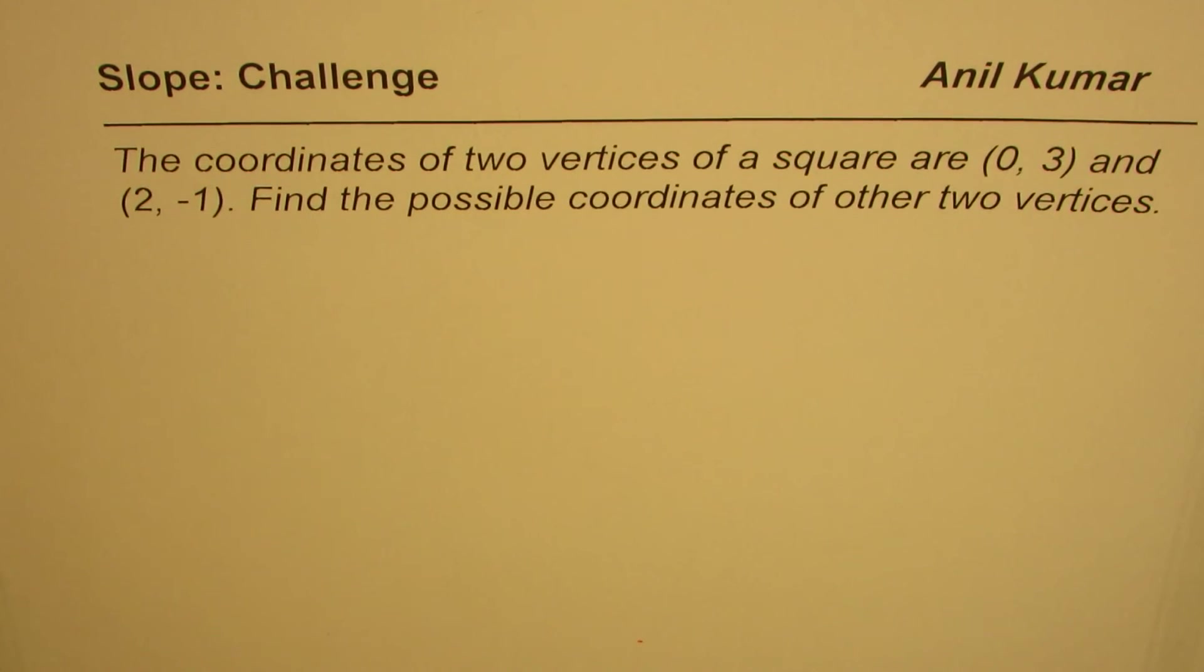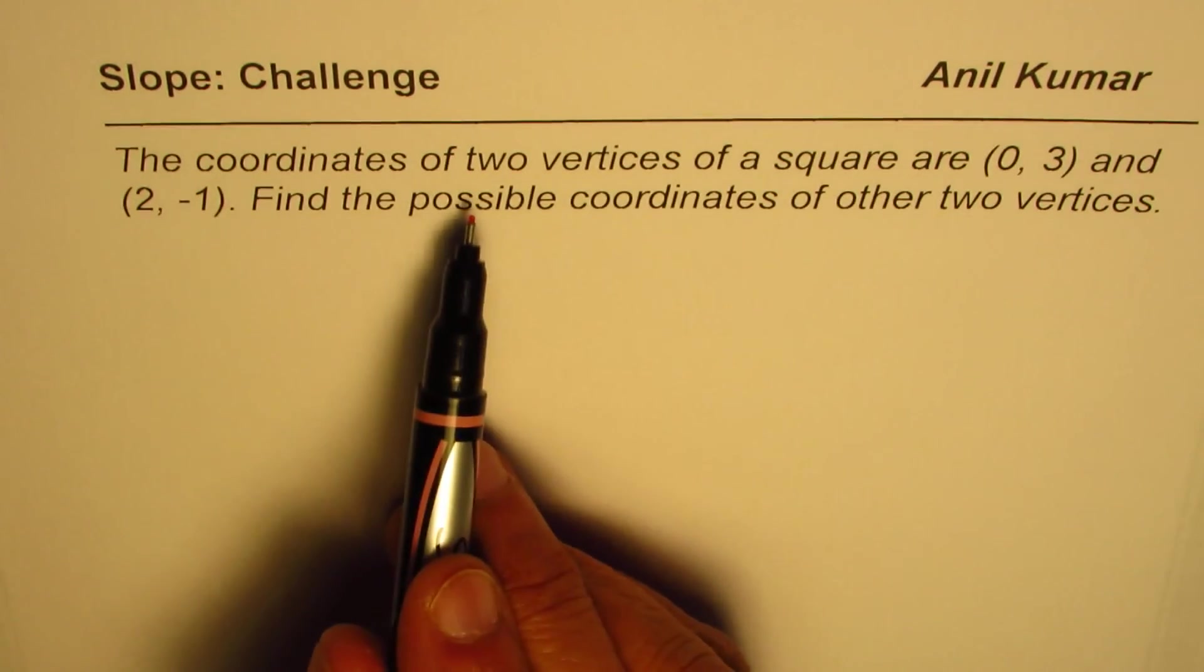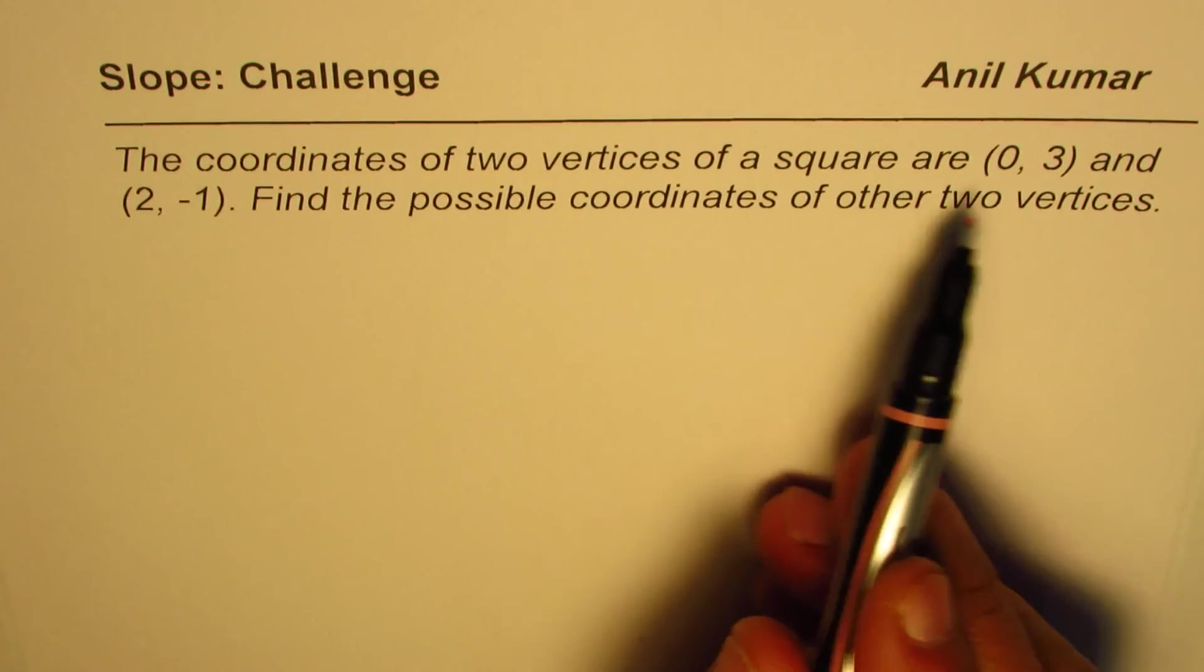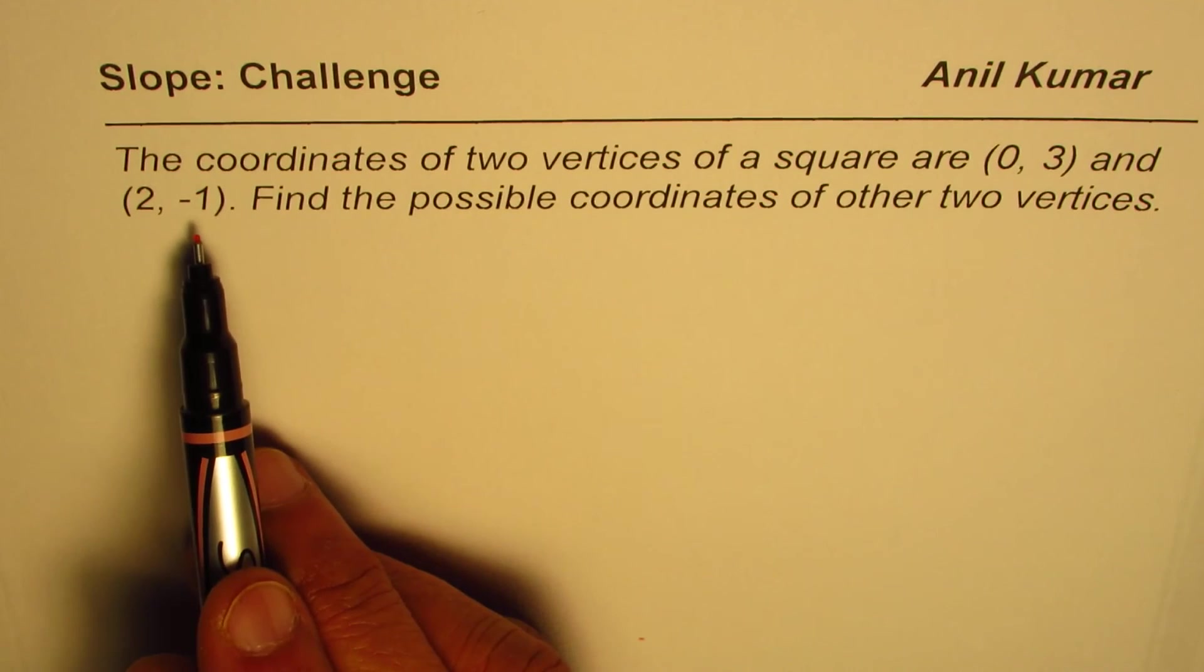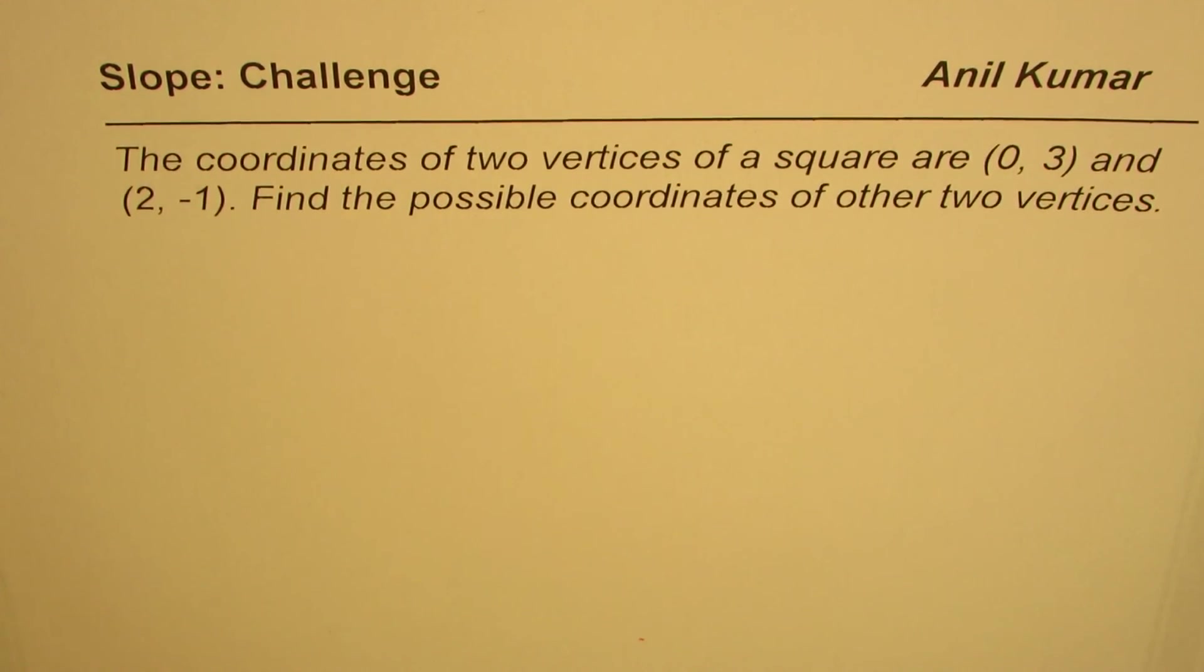I'm Anil Kumar. Here is a practice question for you. The coordinates of two vertices of a square are (0, 3) and (2, -1). Find the possible coordinates of the other two vertices.